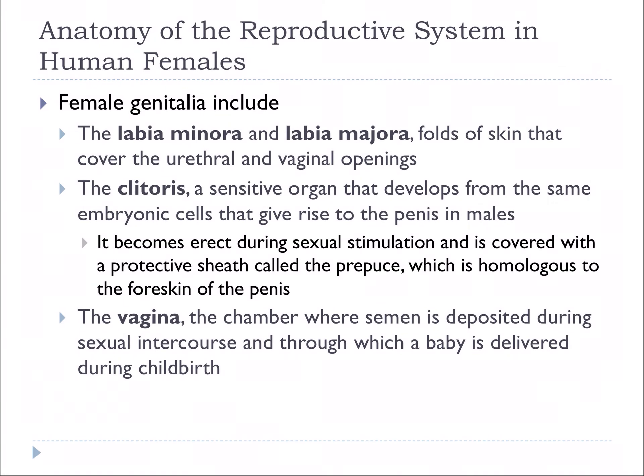Continuing along here with part two of the reproductive system, the female reproductive system. The external genitalia are the labia minora and the labia majora.